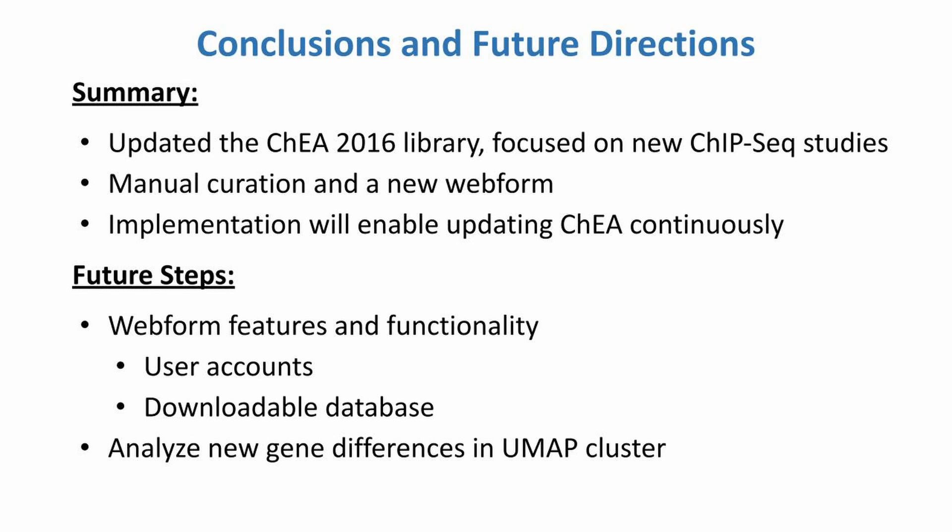In summary, my project entailed updating the CHIA 2016 library, focusing on new ChIP-seq studies, and developing a new web form to allow for manual curation. Implementation of this newest version of CHIA will enable updating CHIA continuously. Future steps include adding more features and functionality to the web form, including a name login and downloadable database, as well as analyzing the new gene differences in a UMAP cluster.